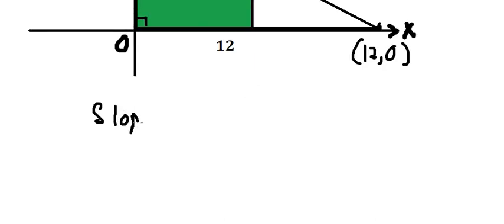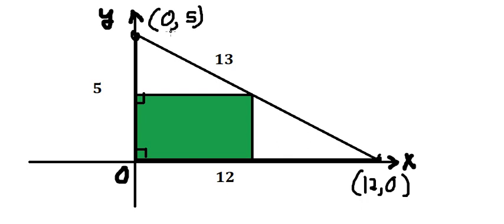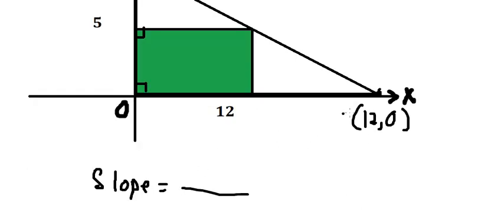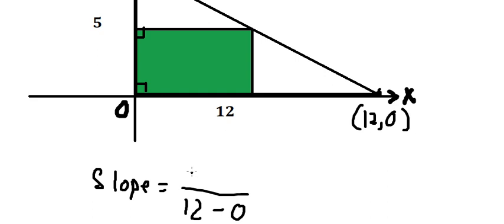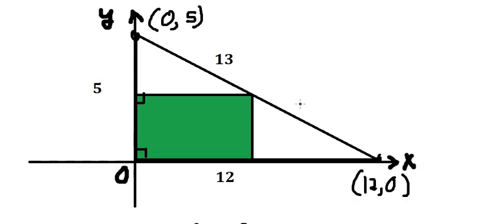Now we need to find the slope of the hypotenuse using these two points. We have (12, 0) and (0, 5). So the slope is negative 5 over 12.